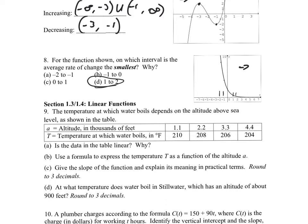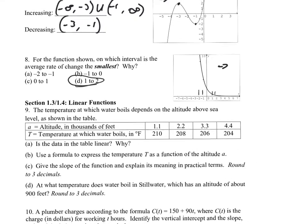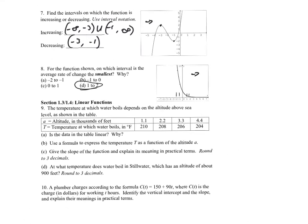For number nine, the temperature at which water boils depends on altitude above sea level as shown in the table. The first question asks whether the data is linear and how we know. To check, I calculate the slope between two points and then between two other points to see if the slope is the same.